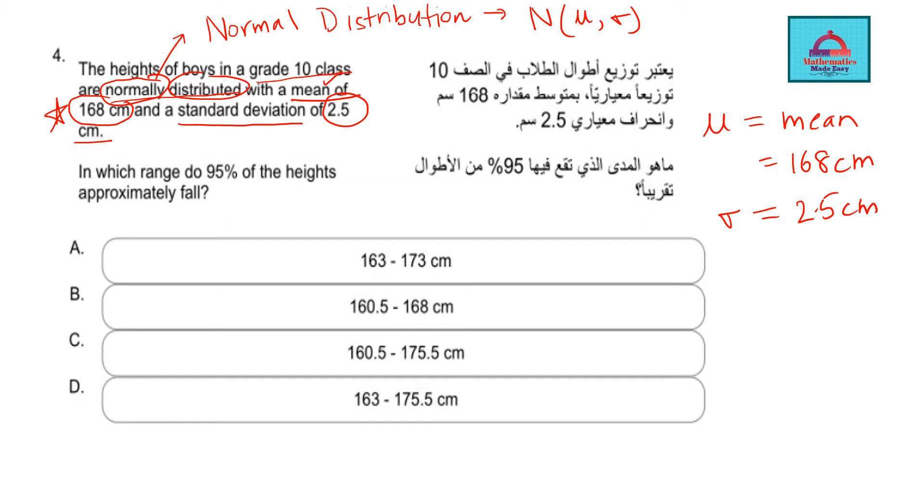And the question is asking you in which range do 95% of the heights approximately fall? So A, B, C, D, four options are there. It is a range. So as you see, there is a lower limit, upper limit. And in order to solve this question correctly, let me take you to a normal distribution curve. And from there, we will get an answer very quickly. So let's go to the next slide and see the normal distribution.